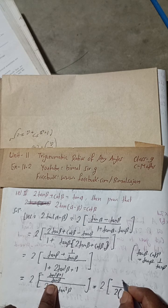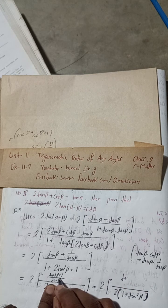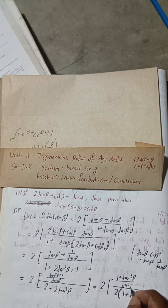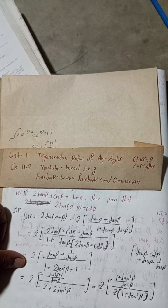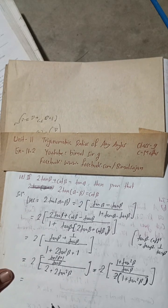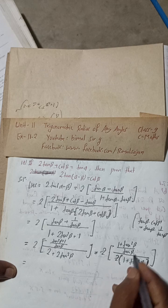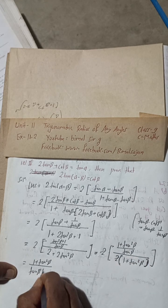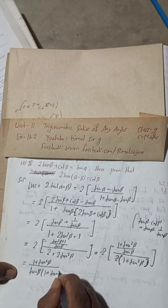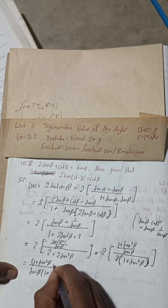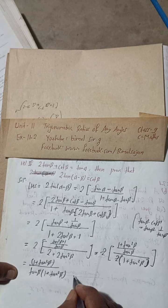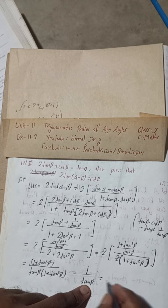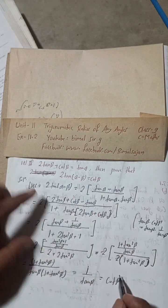We can write 1 + tan²β in the form (1 + tan²β)/1. So the expression becomes: tan β / (1 + tan²β). Now (1 + tan²β) appears in both numerator context and denominator — they cancel, leaving 1/tan β, and 1/tan β is equal to cot β, which is the RHS. Hence proved.